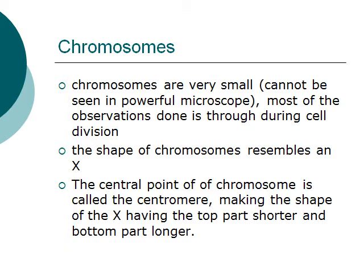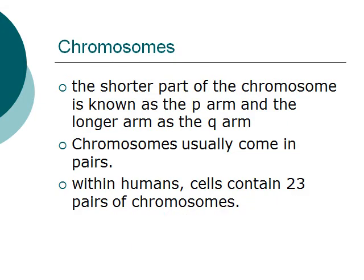The shape of chromosomes resembles the shape of the letter X. The central point of the chromosome is called the centromere, making the shape of the X have the top part shorter and the bottom part longer. The shorter part of the chromosome is known as the P arm, and the longer arm as the Q arm.